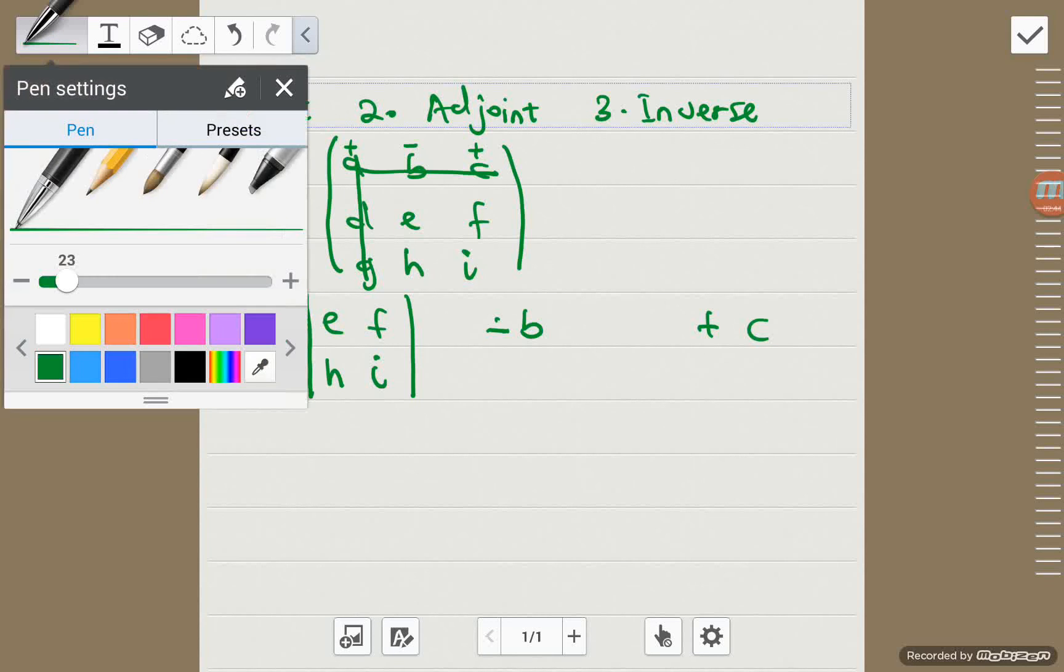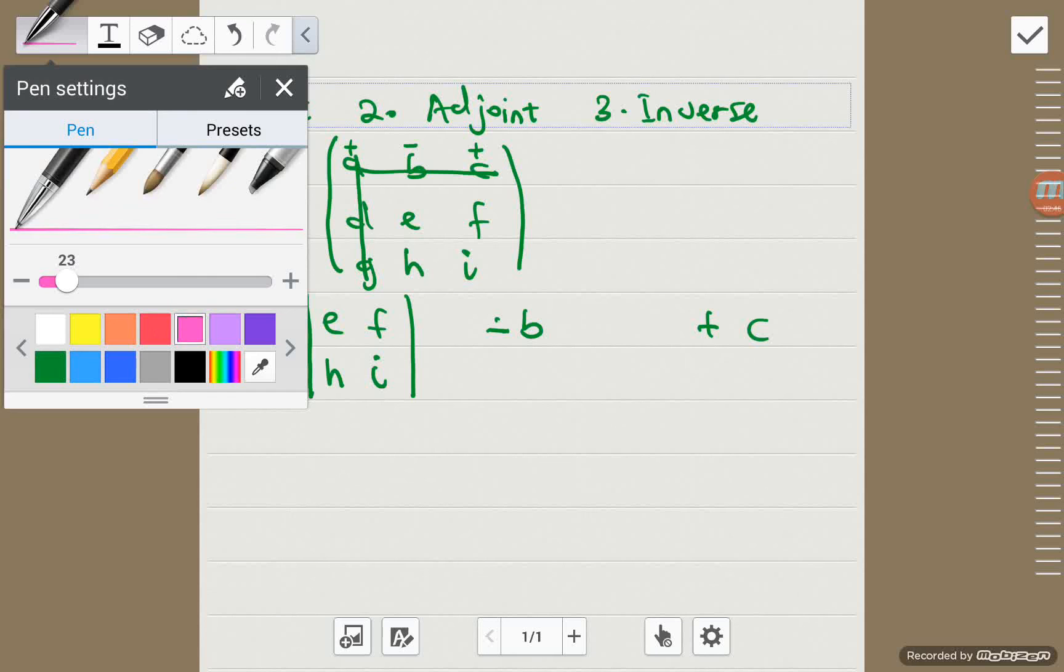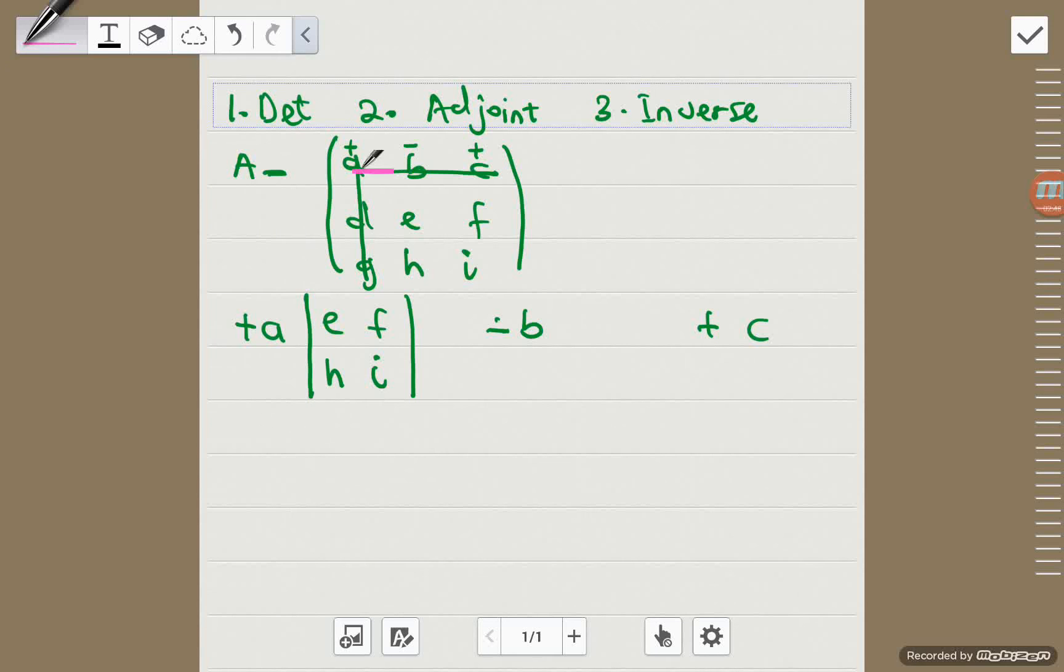Then we move on to the second component, which is minus B, and we cross out the row and the column in which we can locate B, and find the determinant of the remaining minor, which is D, F, G, I.